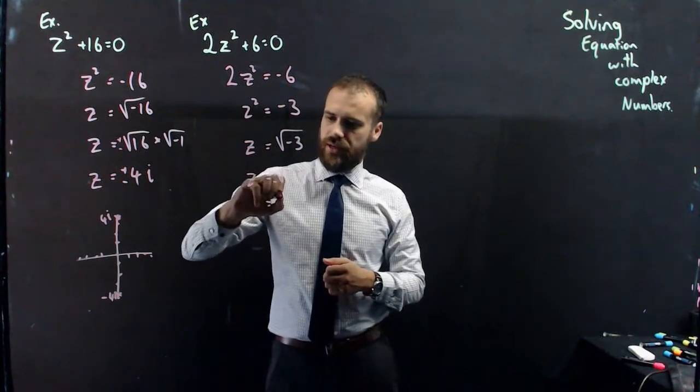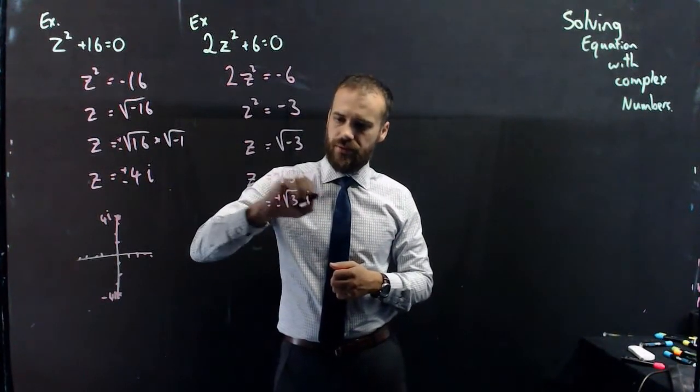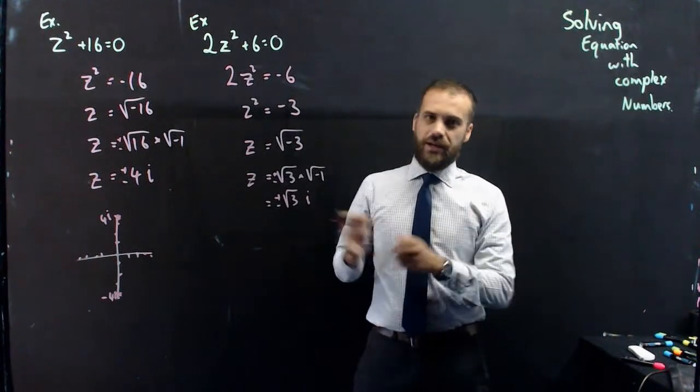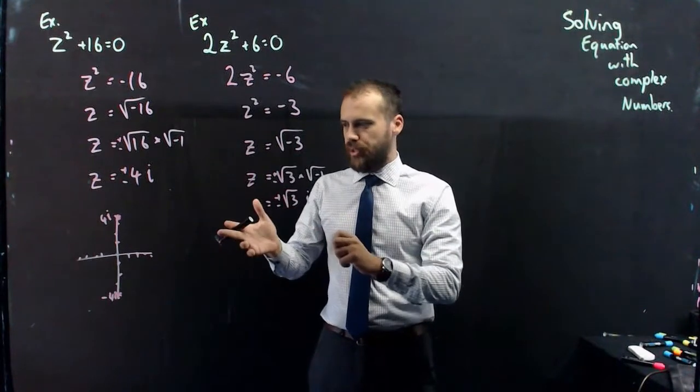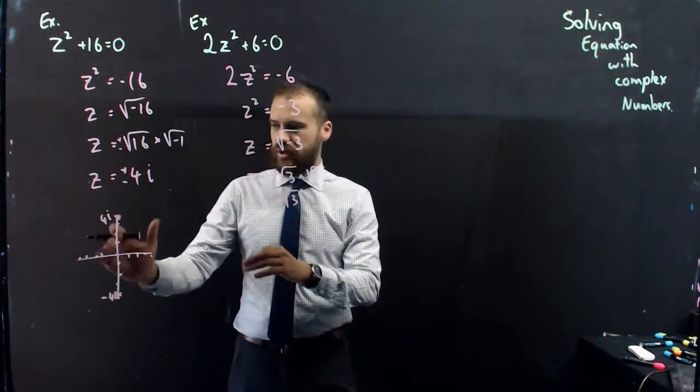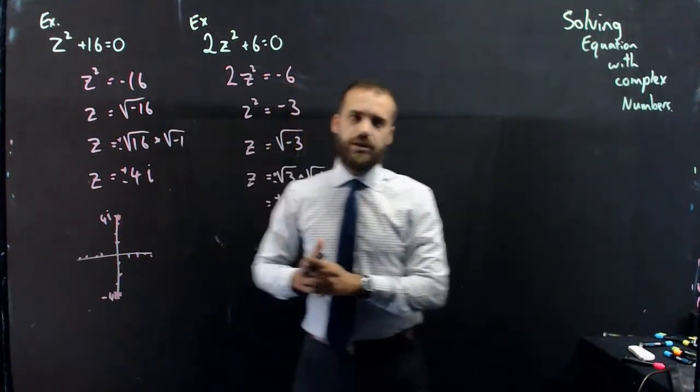Okay, so what we have here now is plus or minus root 3i. And again, purely imaginary. We can put it on our complex number plane. Oh, sorry, on our Argand diagram. Positive root 3i, negative root 3i.